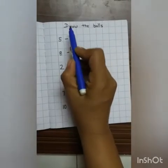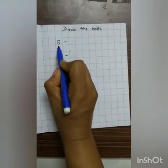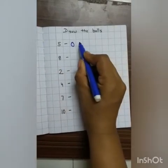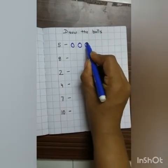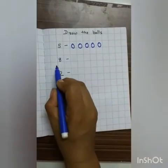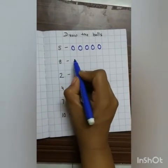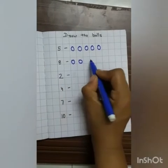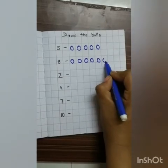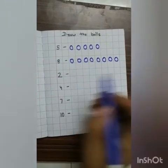Our second exercise is: Draw the balls. Here there is the number 5, so you have to draw 5 balls: 1, 2, 3, 4, 5. This is 8 number, so you have to draw 8 balls: 1, 2, 3, 4, 5, 6, 7, and 8.